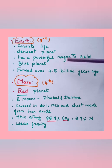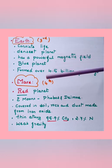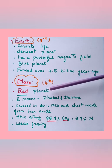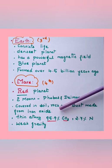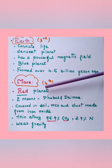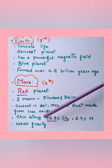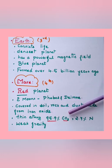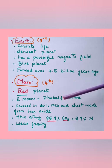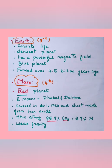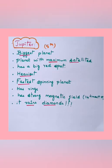Mars is the fourth planet and is called the red planet. It contains two moons — Phobos and Deimos. Mars is covered with soil, rock, and dust made from iron oxide, which makes it look red. It contains a thin atmosphere of about 95.9 percent carbon dioxide, which traps heat rays from the sun. Mars also has about 2.7 percent nitrogen and weak gravity.